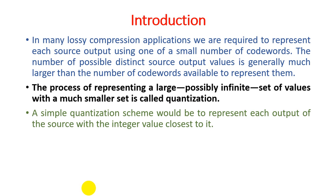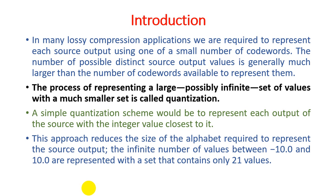A simple quantization scheme would be to represent each output of the source with the integer value closest to it. For example, if you have one to ten, and you want to represent all values, you can take the closest value like five to represent them. This approach reduces the size of the alphabet required to represent the source output.